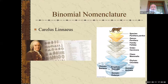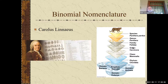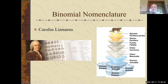Carl Linnaeus — lots of different names, he actually Latinized his own name — came up with the idea of domain, kingdom, phylum, class, order, family, genus, species. We did that in week one. But he's the one that came up with genus and species as a way of naming things: binomial nomenclature.